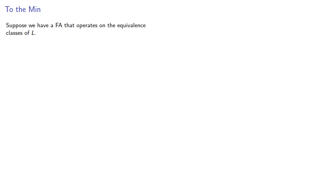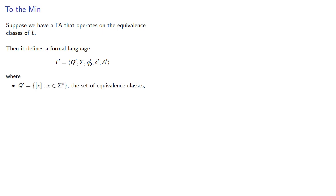Let's think about that. Suppose we have a finite automaton that operates on the equivalence classes of L. Then it will define a formal language, where our set of states will be the set of equivalence classes. The transition function for going from one state when you encounter the symbol A to the next state xA was shown to be well defined, and we'll choose to define our initial state as the equivalence class of the empty string.